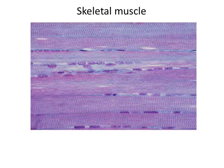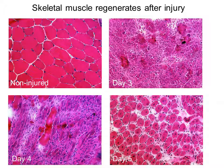It's a very specialised structure for contraction. Although skeletal muscle is a very stable tissue, it's able to regenerate following injury. These are cross-sections — transverse sections — so in this case the muscle is coming out towards you.